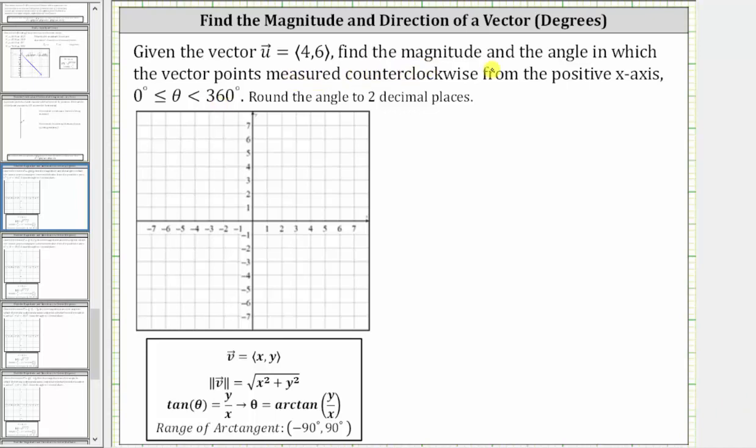Given vector u in component form, find the magnitude and direction, which is the angle in which the vector points measured counterclockwise from the positive x-axis, and we're told to give the angle in degrees.